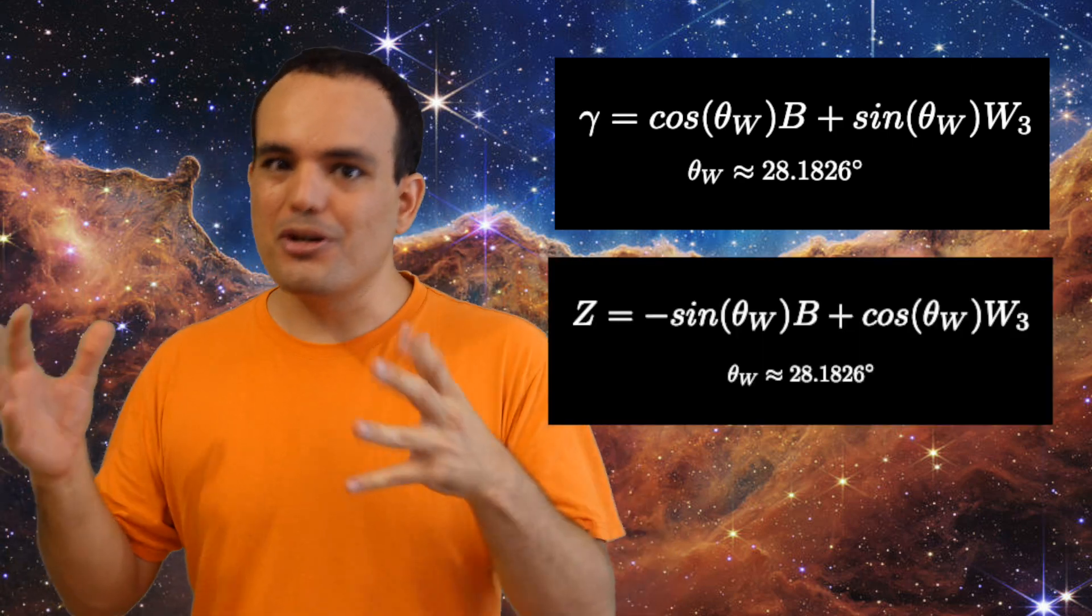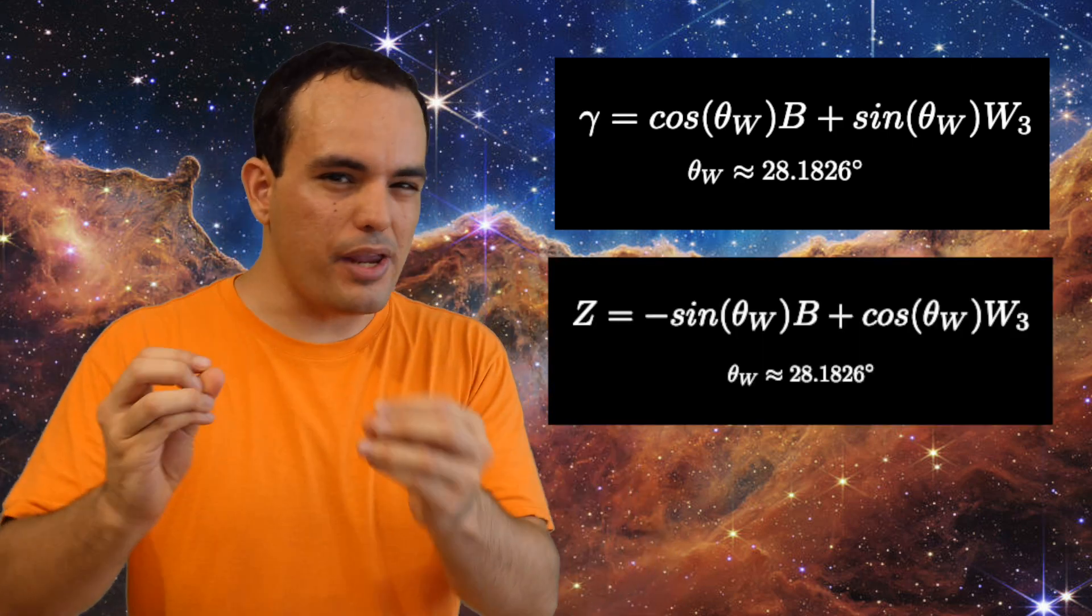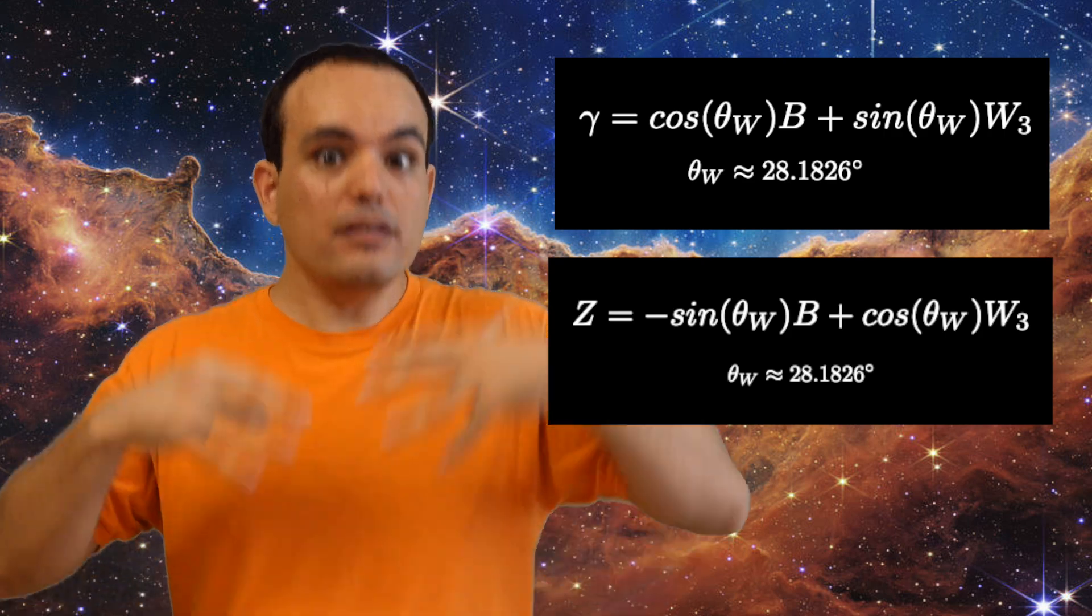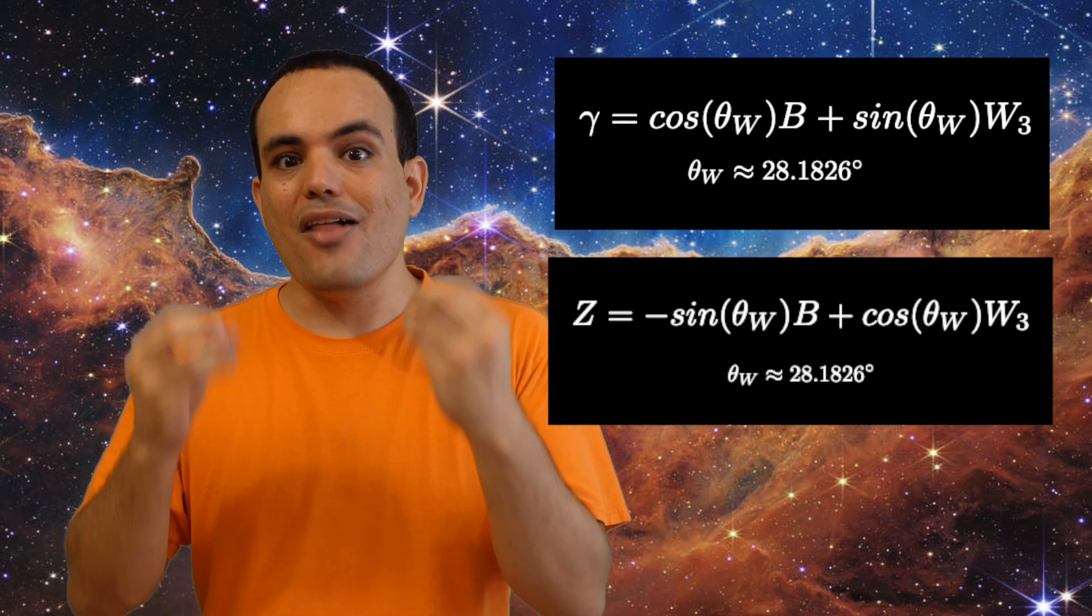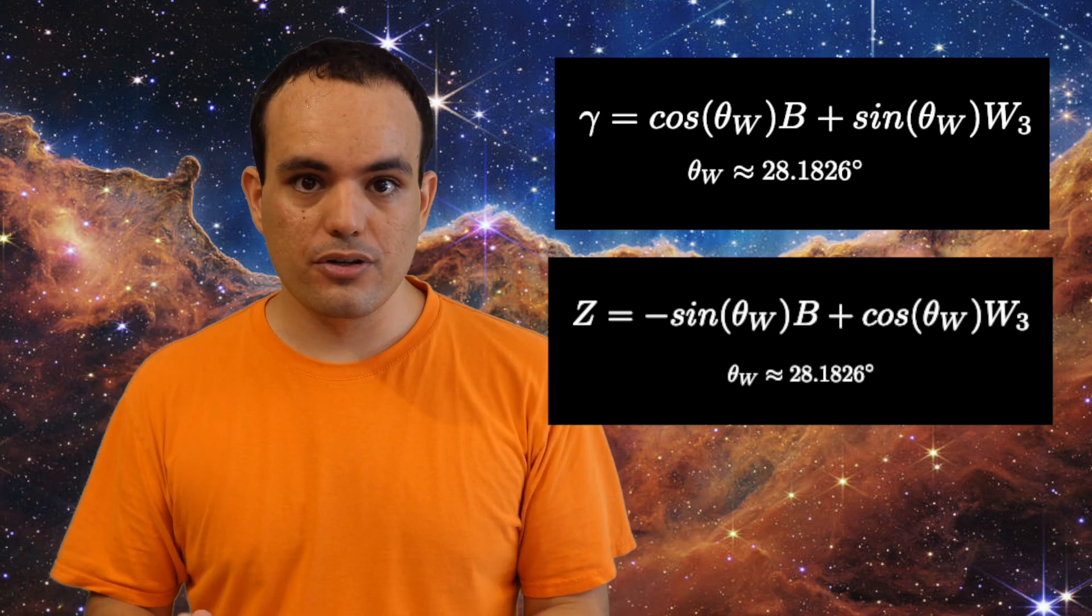But if you combine B and W3 a different way, you get a particle that does have a lot of mass while still being neutral, and this is the Z boson. Finally, this also affected W1 and W2. They went from being massless to having a lot of mass, and now their isospin looks like electric charge, so we call them W plus and W minus.